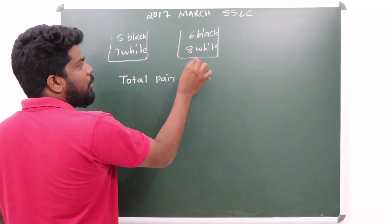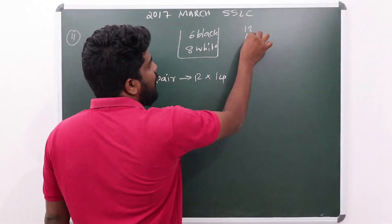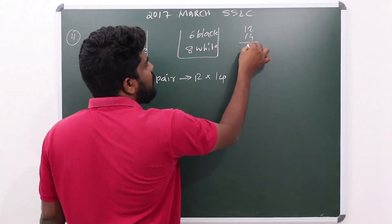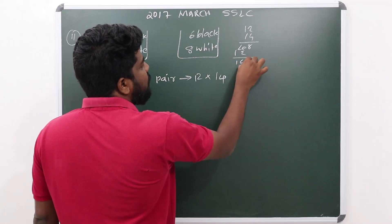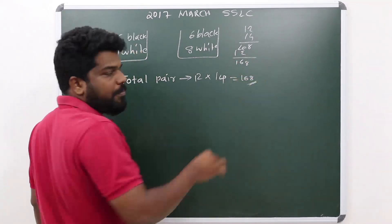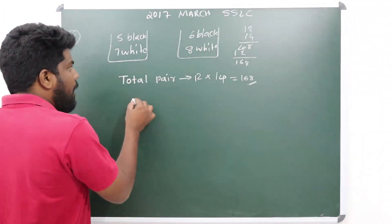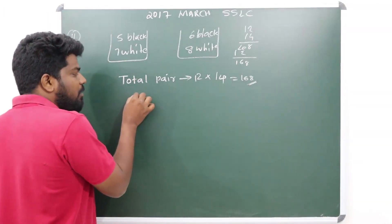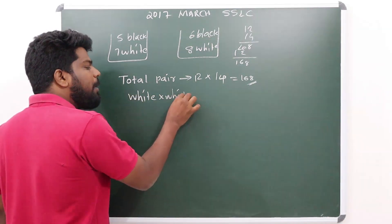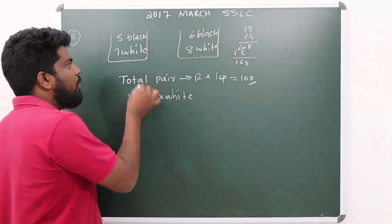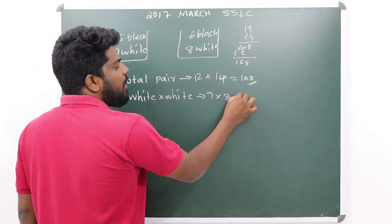The total number of outcomes is 14 choose 2, which gives us 14 × 12 = 168. So the total sample space is 168.